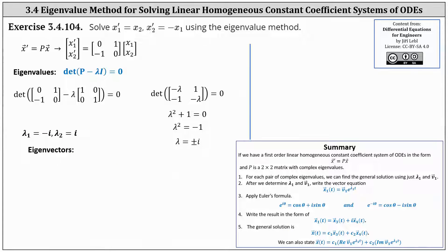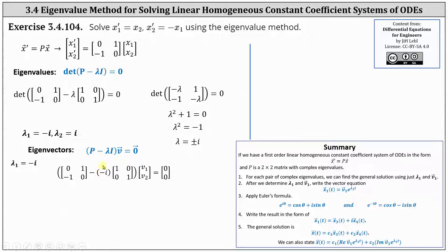To find a corresponding eigenvector, we set up the equation: the difference of matrix P and lambda I times vector V equals the zero vector, and then determine V. Using lambda sub one equals negative i, this gives us the two-by-two matrix where the first row has entries i and one, and the second row has entries negative one and i. The system is dependent, meaning we have an infinite number of solutions, and therefore we can determine a corresponding eigenvector using just one of the equations.